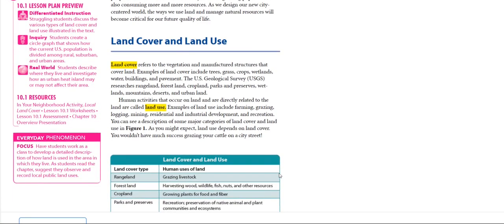Land cover refers to the vegetation and manufactured structures that cover land. Examples of land cover include trees, grass, crops, wetlands, water, buildings, and pavement. Human activities that occur on land and are directly related to the land are called land use. Examples of land use include farming, grazing, logging, mining, residential and industrial development, and recreation.